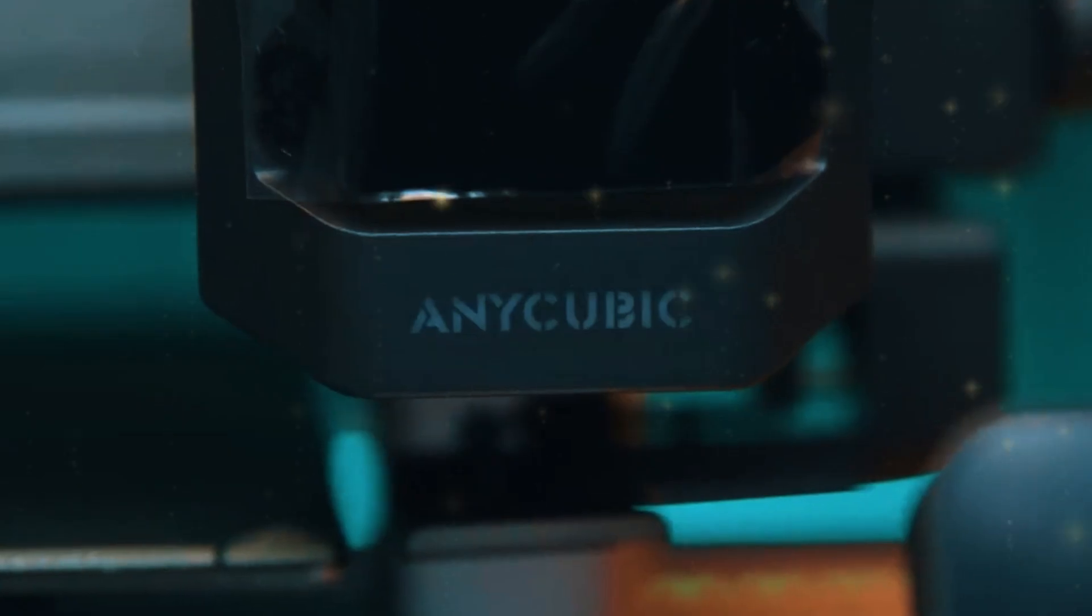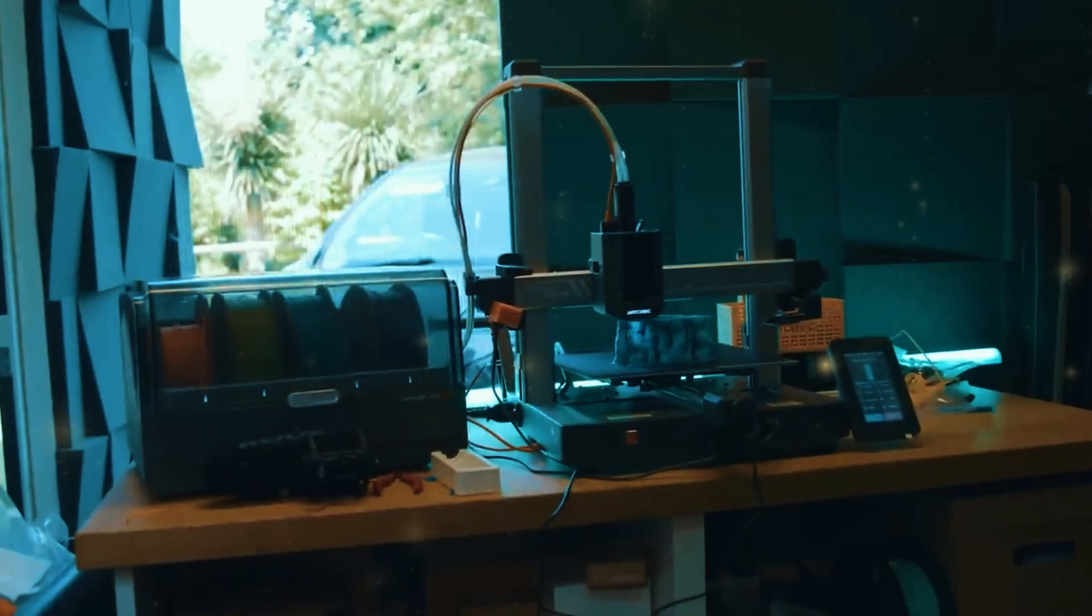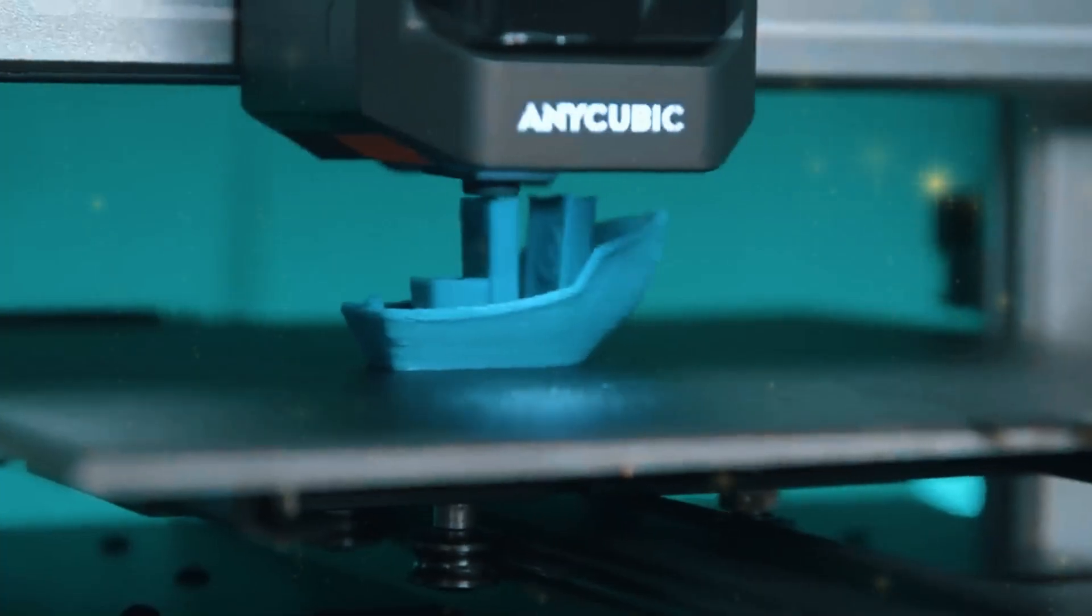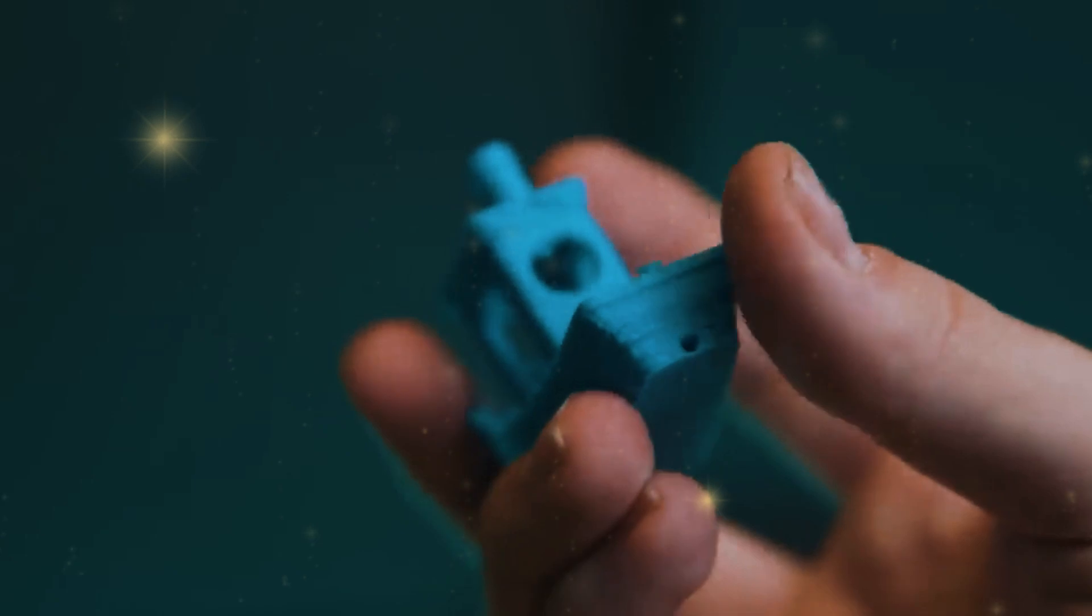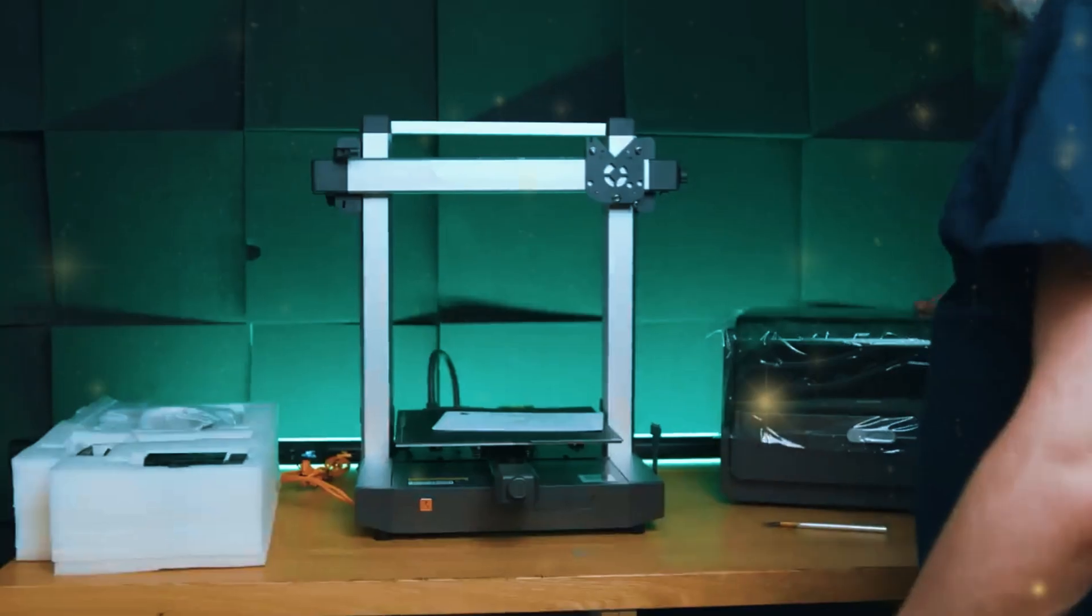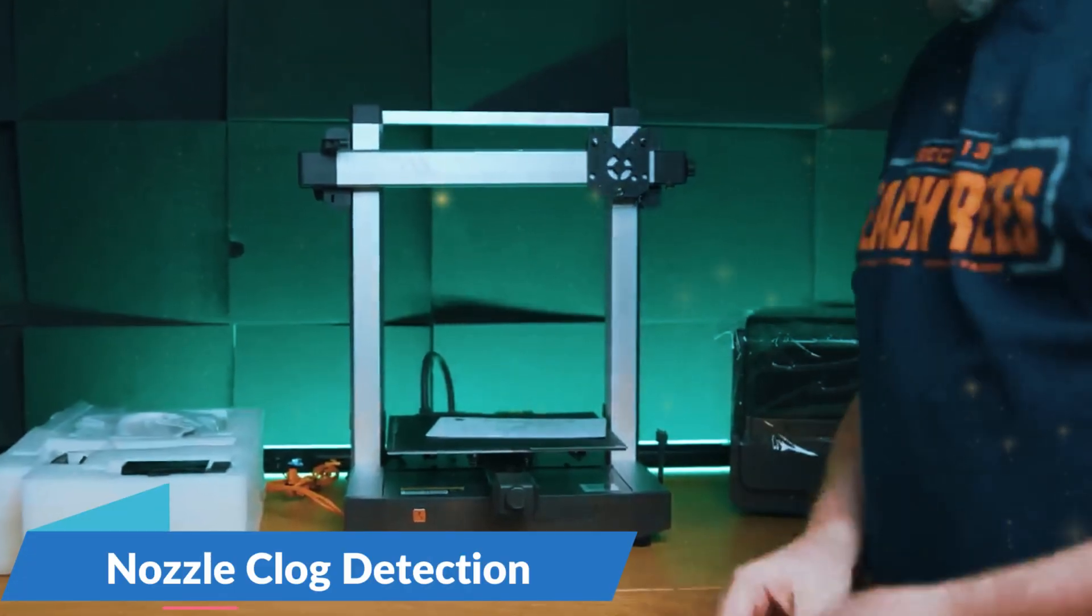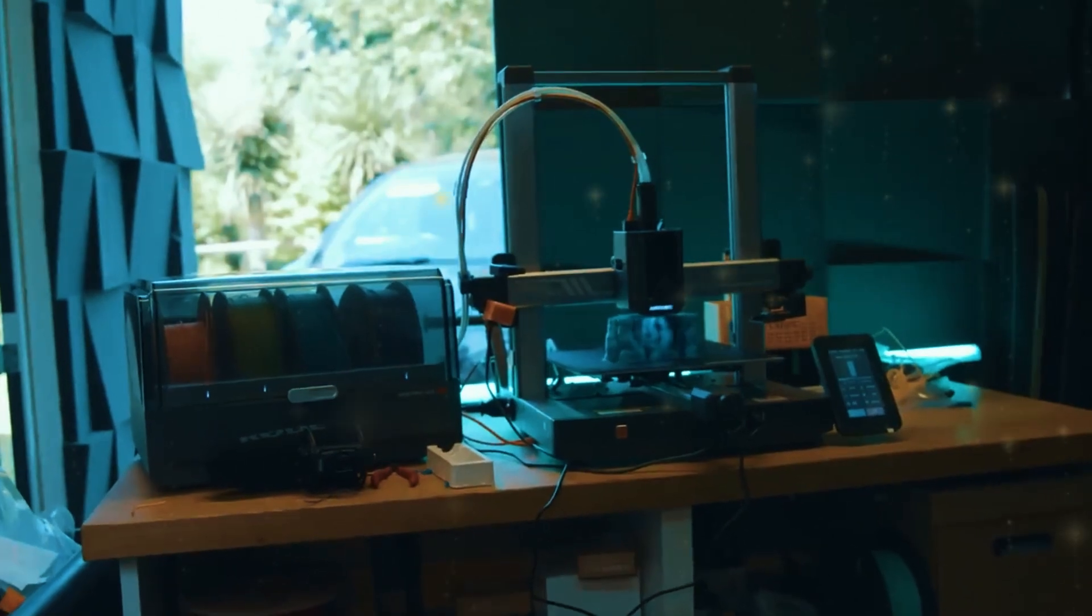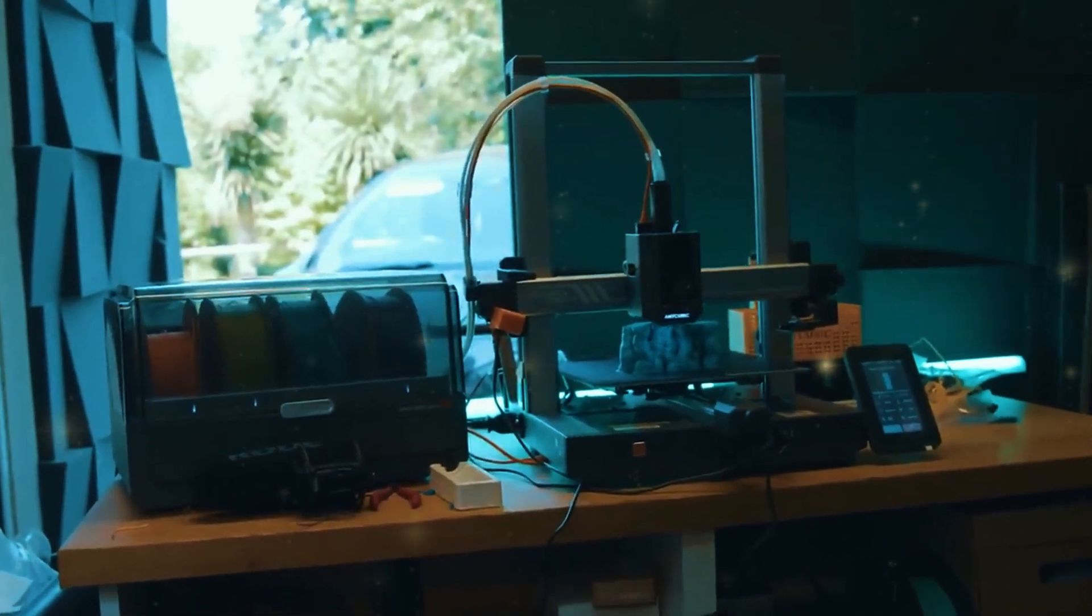On top of that, the Cobra 3 Combo offers a set of features designed to make printing as hassle-free as possible. With its automatic leveling system and a dynamic structure that minimizes vibrations, you get high-quality, smooth prints without too much manual setup. It even has built-in features like nozzle clog detection, automatic filament refilling, and drying, which take care of common printing issues so you don't have to.